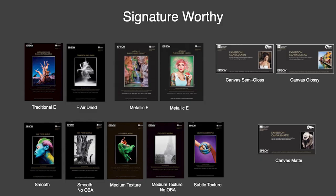Looking at this slide, these are the signature worthy papers. I broke it down with the top row being the photographic papers — the ones that use photo black ink or PK — and the bottom row are those that use matte black ink, the more painterly papers. They're listed by types of surfaces. Luster is traditional; some people call it orange peel. If you're of a certain age and worked in the darkroom, it was E-surface, RC paper. Exhibition fiber paper was designed to be like an air-dried black and white print.